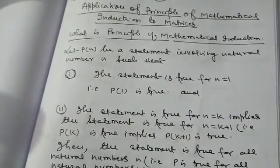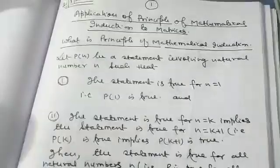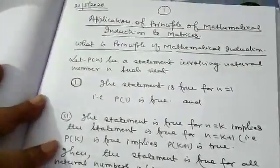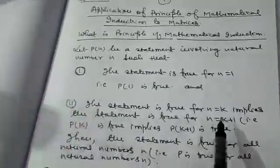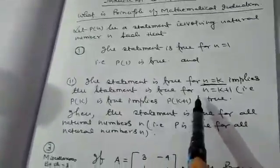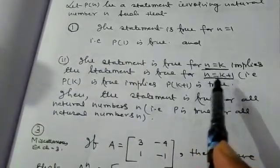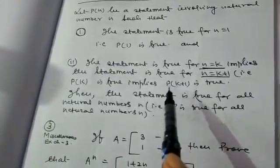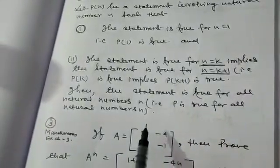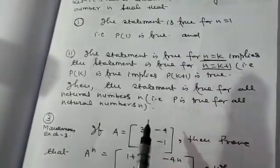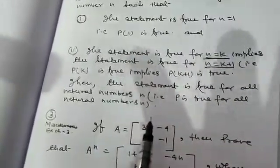My dear students, whatever the statement is given, first you prove it for N equal to 1. Then the result which we have to prove, we consider it is true for N equal to K. And if you can prove that it is true for N equal to K plus 1, then this result will be proved for all values of N. The problem involving the principle of mathematical induction has three steps.